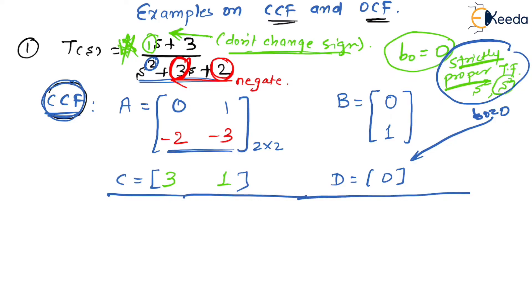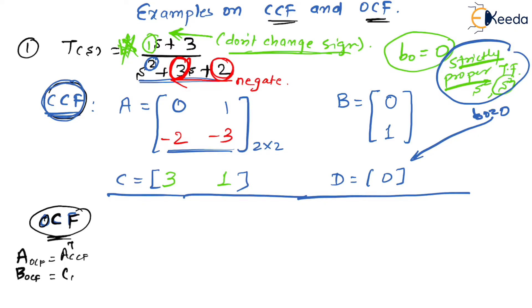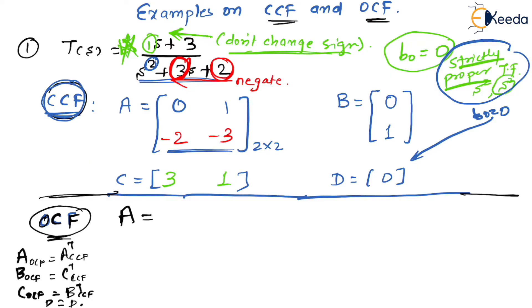Now we are also expected to find the OCF. For OCF, we know that A_OCF is nothing but A_CCF transpose. Similarly, B_OCF equals C_CCF transpose, and C_OCF equals B_CCF transpose, while D remains the same. So let us find A_OCF, which is the transpose of the CCF A matrix. Transpose means we interchange rows and columns.